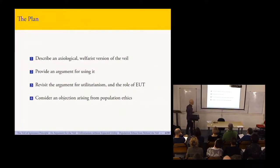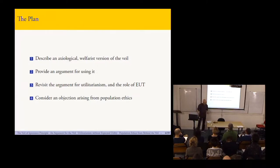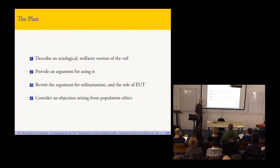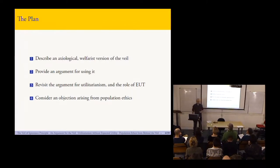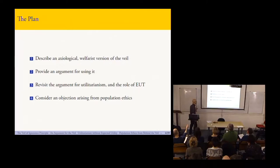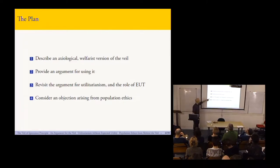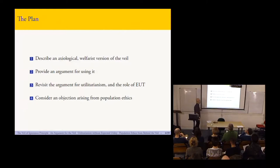Here's the rough plan for the talk. First, I'm going to describe an axiological welfarist version of the veil — instead of talking about preferences in the usual economic style, I'm going to talk about value, what's good for people impartially. The second and most important thing is I'm going to provide an argument for using this particular formulation of the veil. And then I'm going to go on to two extensions: first, revisiting the argument for utilitarianism as seen briefly from Vickery, particularly the role of expected utility theory; and then considering an objection that arises from population ethics.